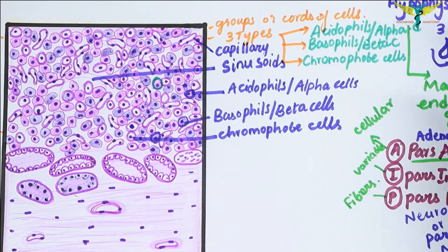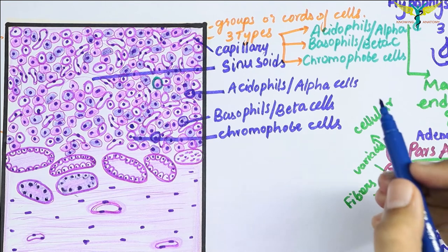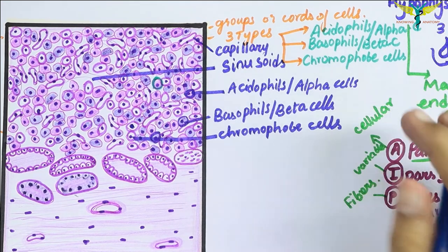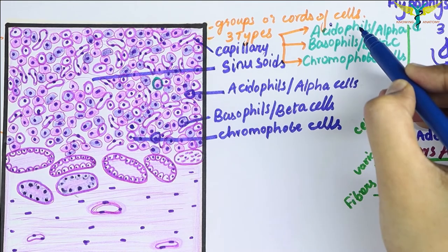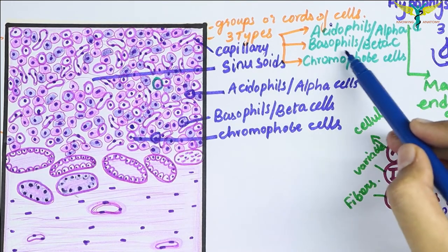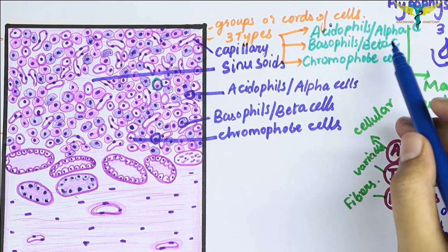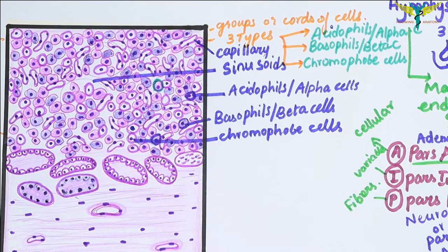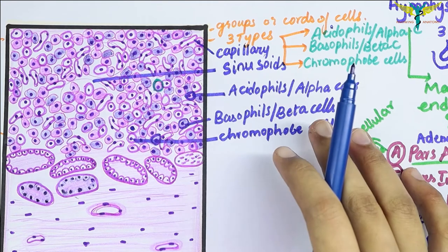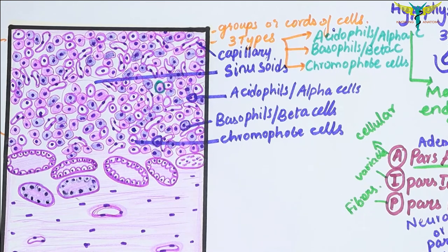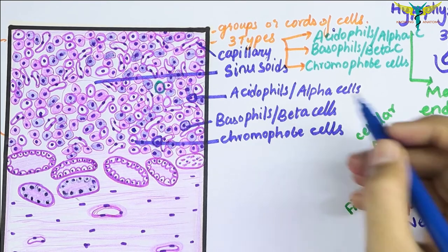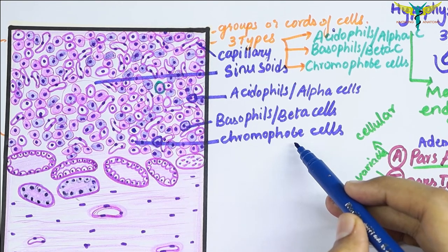Remember, within the acidophils there are many types of cells: somatotrophs that produce growth hormone or somatotrophin, and mammotrophs or lactotrophs which produce mammotrophin or prolactin. Coming to the basophil category: corticotrophs stimulate the secretion of hormones of the adrenal cortex; thyrotrophs produce the thyrotropic hormone or TSH; and gonadotrophs produce the main hormones FSH and luteinizing hormone.